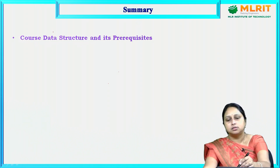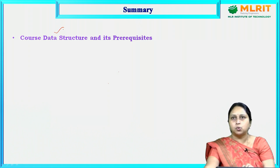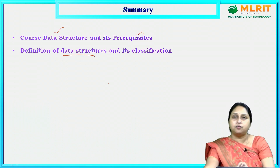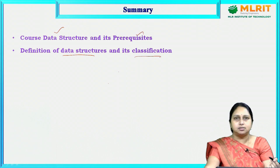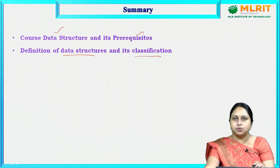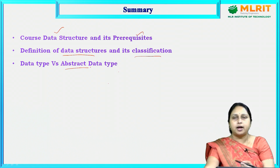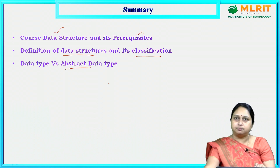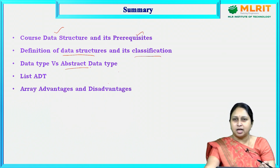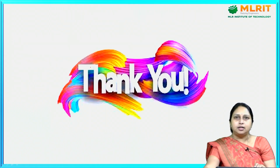In this session we have seen the importance of studying Data Structures, the prerequisites, the definition, and the classifications — primitive, non-primitive, linear, non-linear, static, and dynamic. We also covered data type versus abstract data type, where data type is predefined and ADT is user-defined and hides the implementation. Lastly, we saw List ADT, arrays, and their advantages and disadvantages. In the next session, we will look into linked lists.